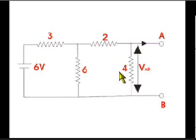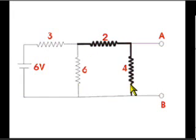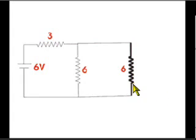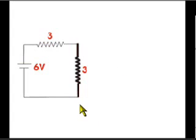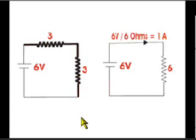Now if we observe the network carefully, the voltage that appears across the terminal AB is nothing but the voltage drop across the 4 ohms resistor as shown. Here in the network, this 2 ohms resistor and 4 ohms resistor are series connected. Hence equivalent resistance of this combination will be 6 ohms. Now this equivalent 6 ohms is in parallel with another 6 ohms resistor, hence resultant resistance of this combination will be 6 by 2, that is 3 ohms. This 3 ohms resistance then again is in series with another 3 ohms resistance. Hence resistance offered by the network across the voltage source is 3 plus 3, that is 6 ohms.